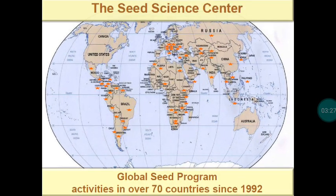At a global level, more than 70 countries are involved in seed production, shown in orange on the map. They are producing seeds not only to fulfill their own requirements but also excess quantities that are exported to other countries for foreign exchange, strengthening their financial position. Europe and North American countries particularly concentrate on seed production activity for export.